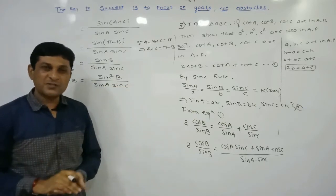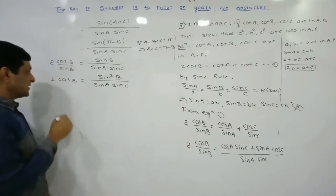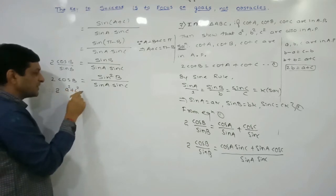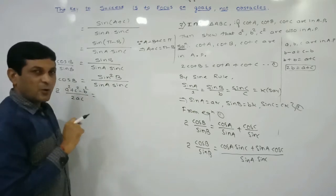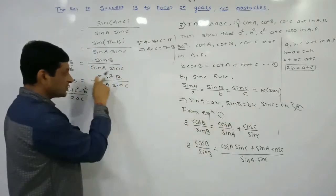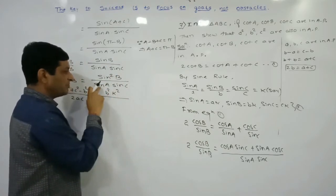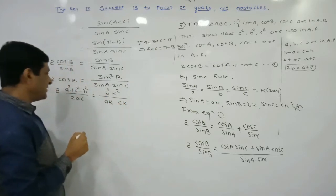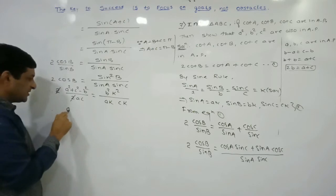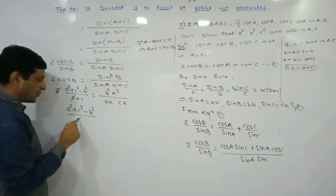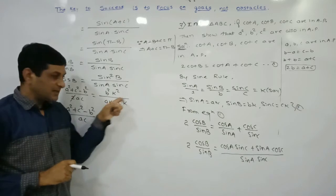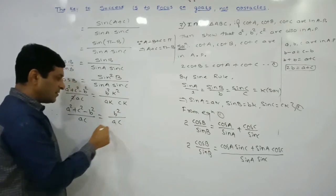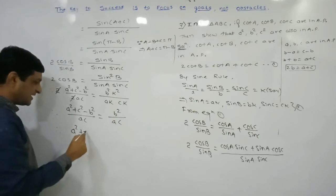Now the whole expression is in terms of sin and cos, so we apply sine rule and cosine rule to convert everything in terms of a, b, c. By cosine rule: cos B = (a² + c² − b²) / 2ac. By sine rule: sin B = bk, so sin²B = b²k². In the denominator, sin A = ak and sin C = ck, so sin A · sin C = ak · ck = ack².